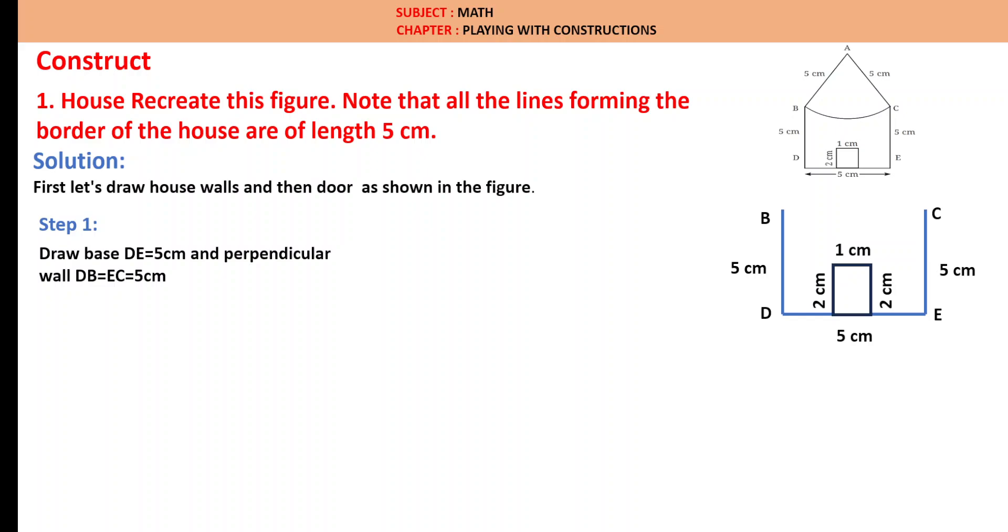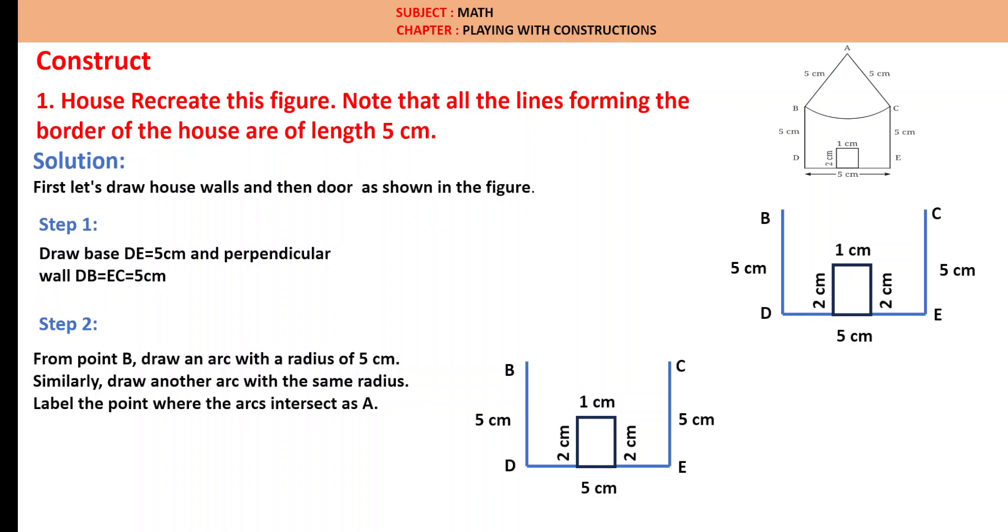Step 2: From point B, draw an arc with a radius of 5 cm. Let us measure this and draw from point B an arc of the radius of 5 cm. Similarly, from point C, let us draw another arc with the same radius of 5 cm and notate the intersecting point as A. Now we know that AB is 5 cm and AC is 5 cm.